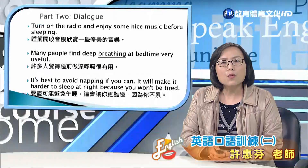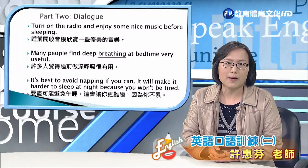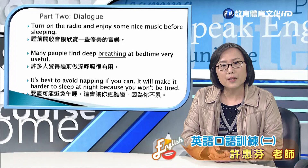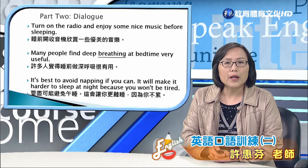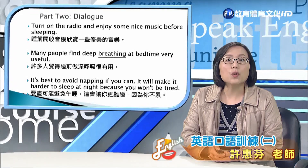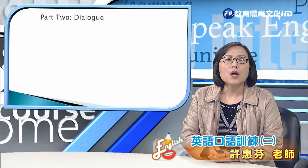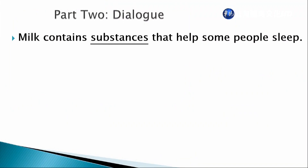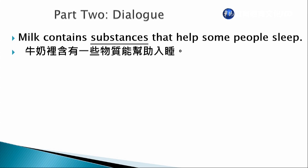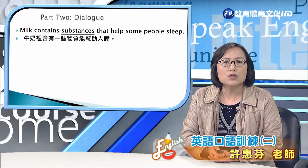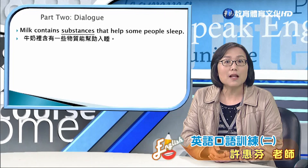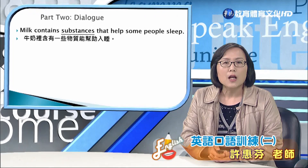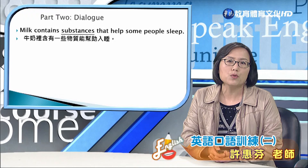It will make it harder to sleep at night because you won't be tired. 午睡的話會讓你不累，這樣晚上會更難睡。Milk contains substances that help some people sleep. 牛奶含有一些物質，that指的就是which，代替substance當作help的主詞，也就是這樣的物質可以幫助人們入睡。Help動詞後面如果再有第二個動詞，必須保持原型，所以help people sleep不加ing。